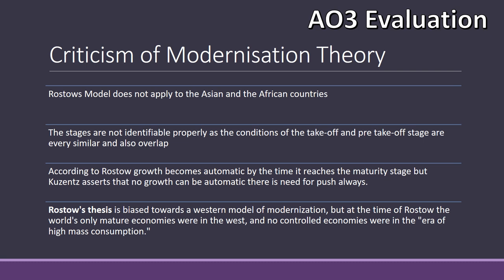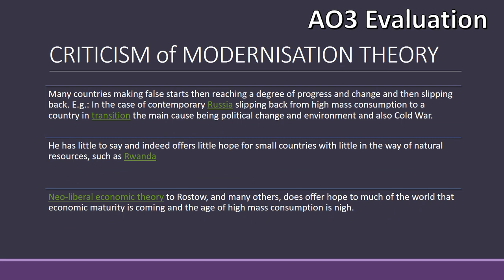According to Rostow, growth is automatic by the time a nation reaches the drive to maturity stage. But Cousins asserts that no growth can be automatic and nations continue to need to push towards development. Rostow's thesis is also based on the Western model of modernization — though as a counter-criticism, when Rostow was writing, the most successful nations were Western ones and they were the only economies seen as being mature, so it was very difficult to see any other alternatives. Another criticism is that many nations move forwards but then move back — Russia is an example, which had a boom at the end of communism but then fell back massively into huge poverty and was left in transition.